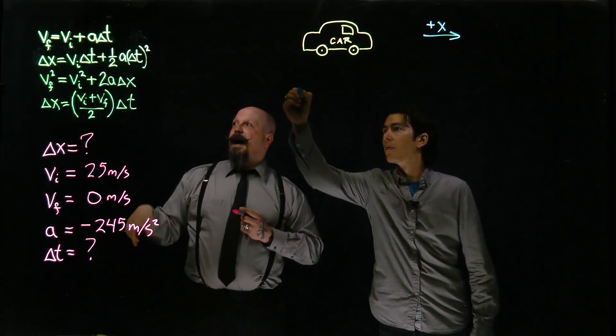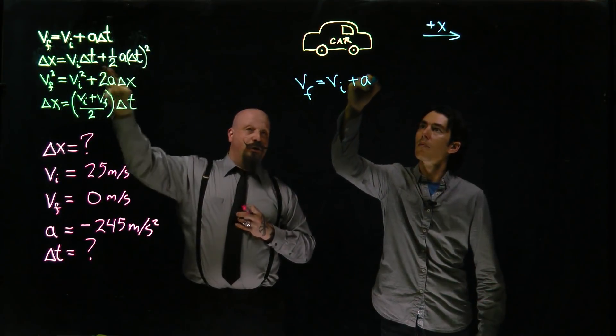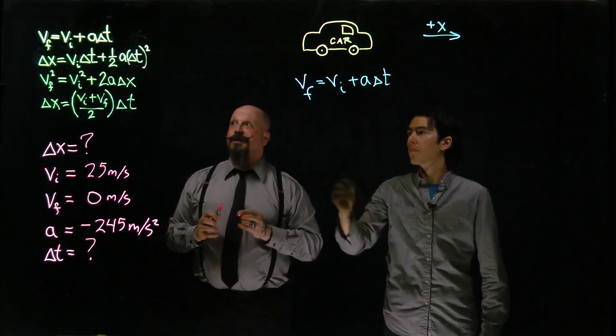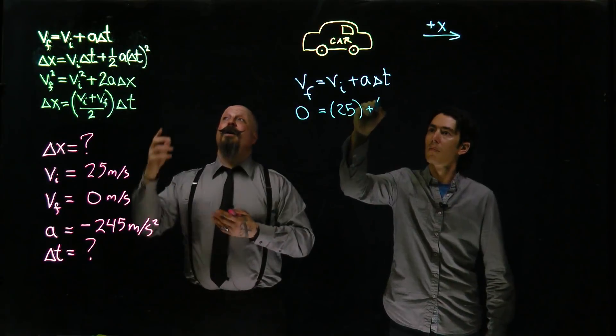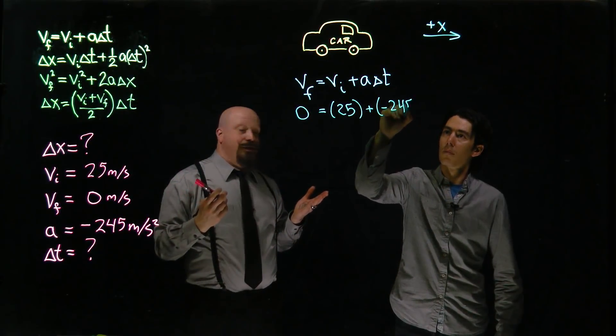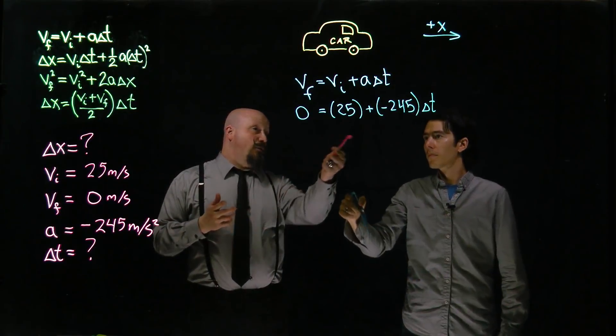This one right here, this first one, has a final velocity, which we actually have, zero meters per second. An initial velocity, which we also have, 25 meters per second. And we add that to an acceleration, minus 245 meters per second squared, multiplied by the differential in time that we experience. That makes it easy to solve for that delta t, because we have all those values.